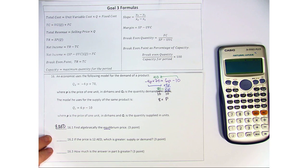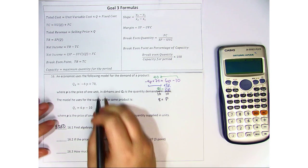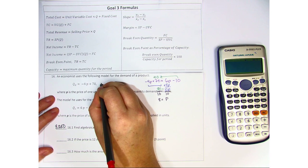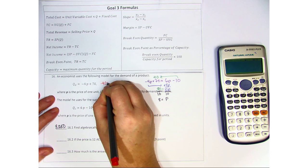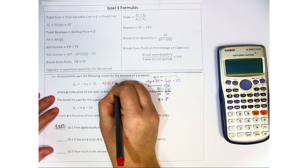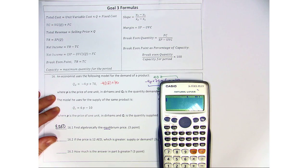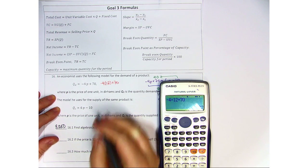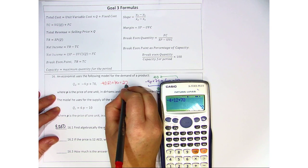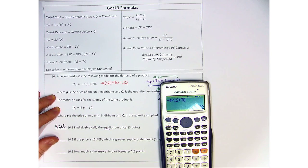If the price is 12, which is greater, supply or demand? Well for this, all we have to do is make a substitution. So negative 4 times 12 plus 70. We'll get out our calculator to make sure we do it correctly. Negative 4 times 12 plus 70 is 22. So the quantity demanded is 22.